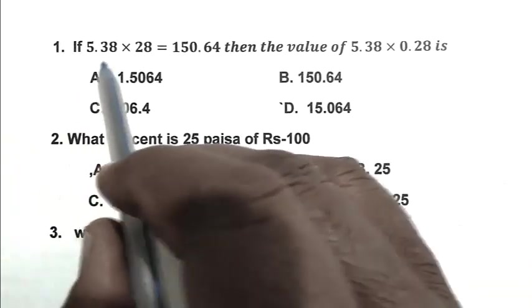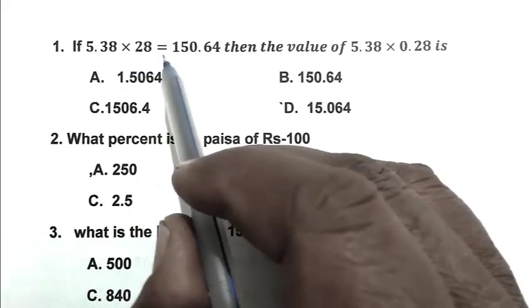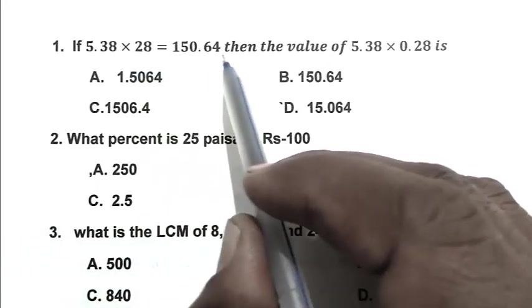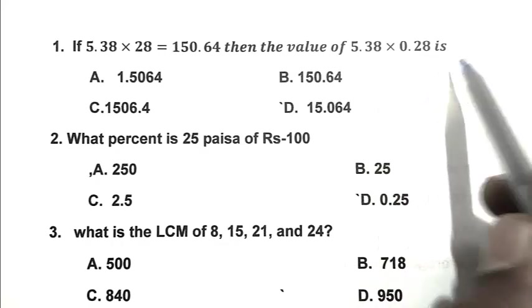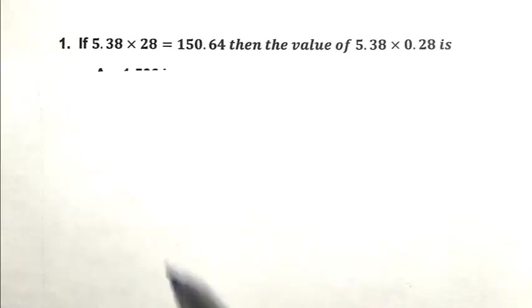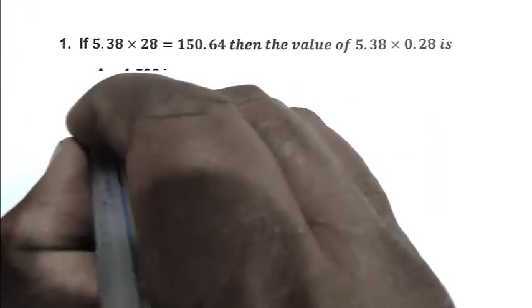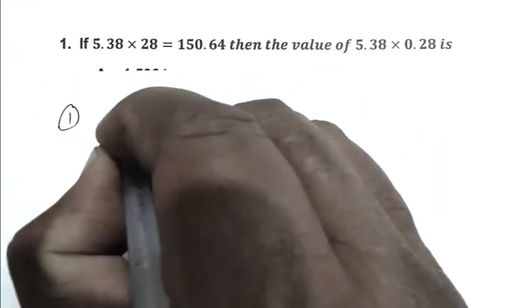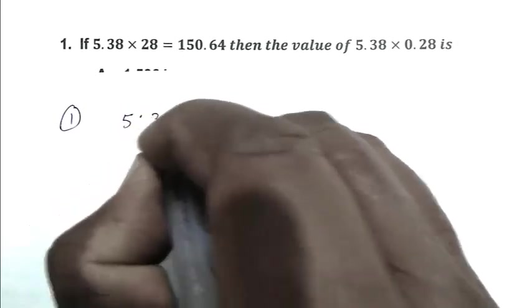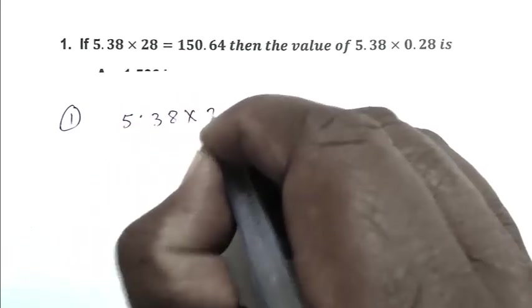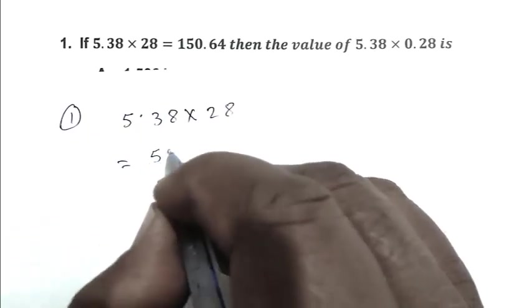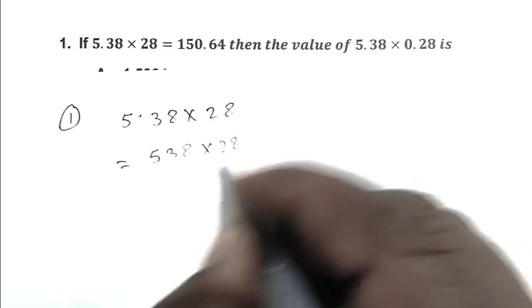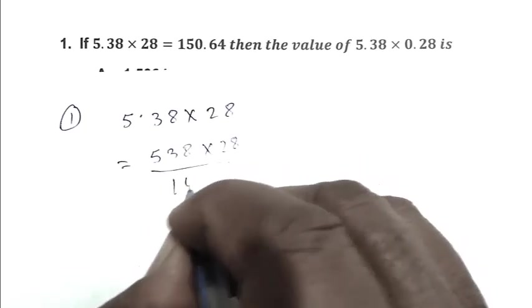Question number 1: If 5.38 multiplied by 28 equals 150.64, then the value of 5.38 multiplied by 0.28 is? So friend, first we write this expression. So it is 5.38 multiplied by 28. Eliminating the decimal point, we get 5.38 multiplied by 28 divided by 100.